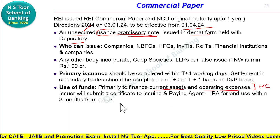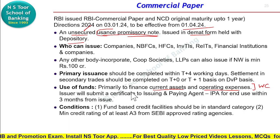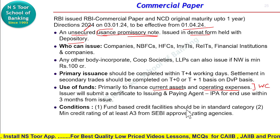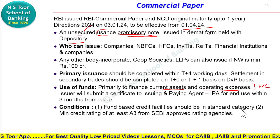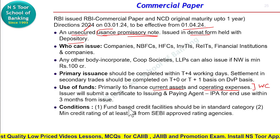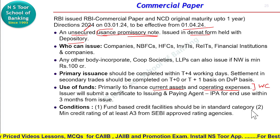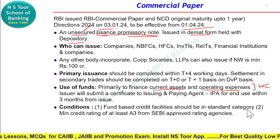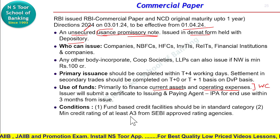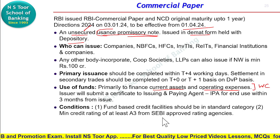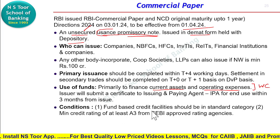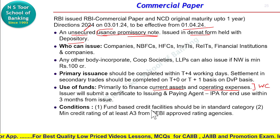Conditions kya hain eligibility ke liye? So fund-based credit facility should be in standard category — agar company ko, NBFC ko, HFC ko fund-based koi facility sanction ki gayi hai to wo standard category mein honi chahiye, yani wo NPA nahi honi chahiye. Second condition: minimum credit rating — it must be at least A3, aur wo bhi kisi SEBI approved rating agency se. So these are two important conditions to be eligible for issuing commercial paper.